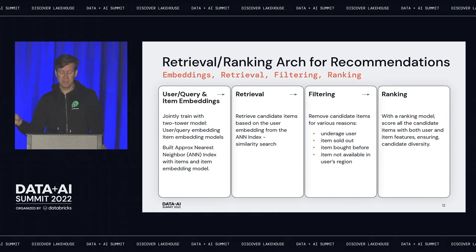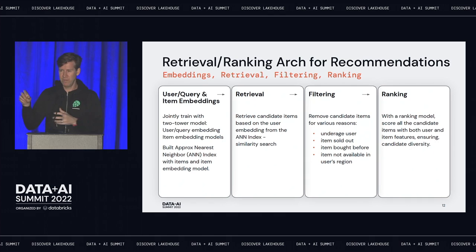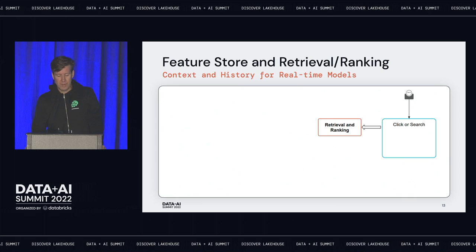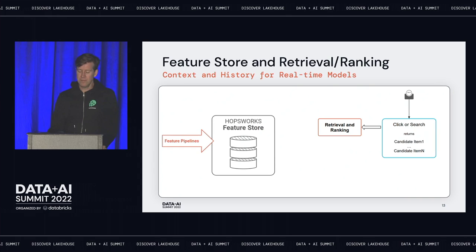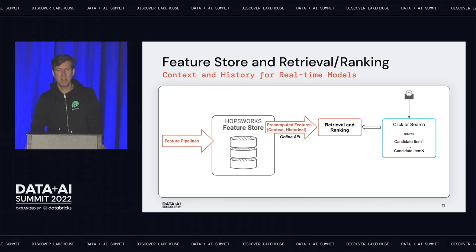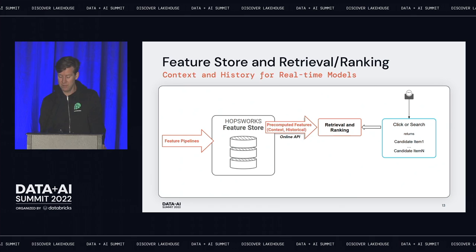The final step: when we have candidates back from the ANN index, we rank them using a ranking model — it needs to be very fast. We only get item IDs back, so we need to enrich those with features for the items and the user from the feature store. The feature store provides pre-computed features about your history, your context, what you've clicked on recently, what you've bought. This stateless web-facing application goes to the feature store for all this state, using those pre-computed features to enrich feature vectors for predictions and similarity search.